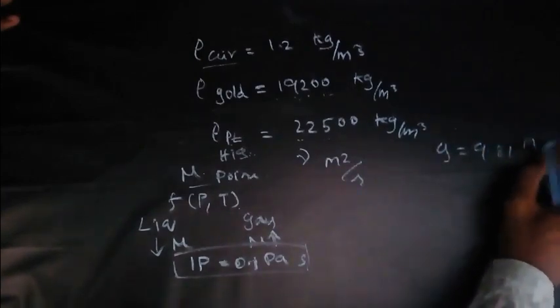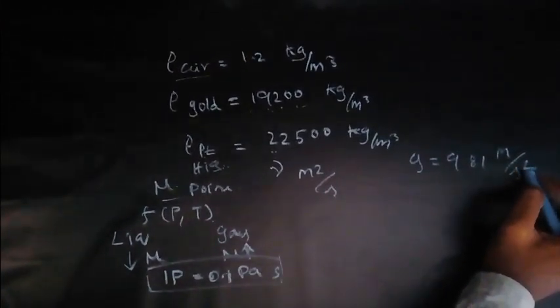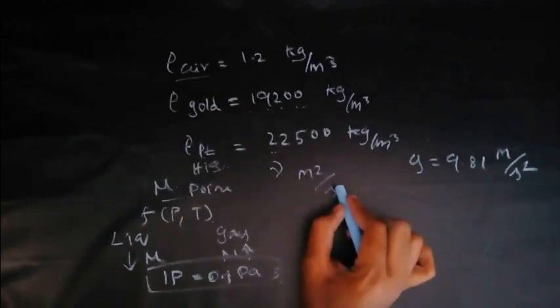So don't confuse it with the unit of gravity. Gravity g is equal to 9.81 meter per second square—it is meter per second square. For kinematic viscosity, it is meter square per second.